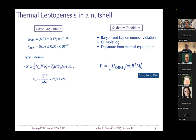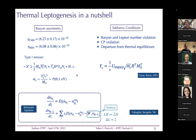In the Type-I seesaw, additional heavy right-handed neutrinos explain the smallness of neutrino masses via suppression by the heavy Majorana mass scale. Since these neutrinos are Majorana, lepton number is violated; the new Yukawa couplings can have large CP violation — fulfilling two Sakharov conditions. Departure from equilibrium occurs when the universe expands and these right-handed neutrinos decay out of equilibrium, producing the required conditions. This is described by a set of Boltzmann equations.